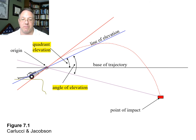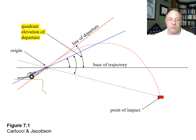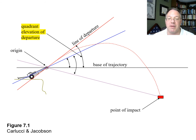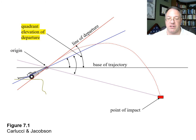There's also a third measure: the quadrant elevation of departure, which is measured from the level base but to the line of departure rather than just to the gun tube. So that's the quadrant elevation of departure, not the standard quadrant elevation which measures to the gun.